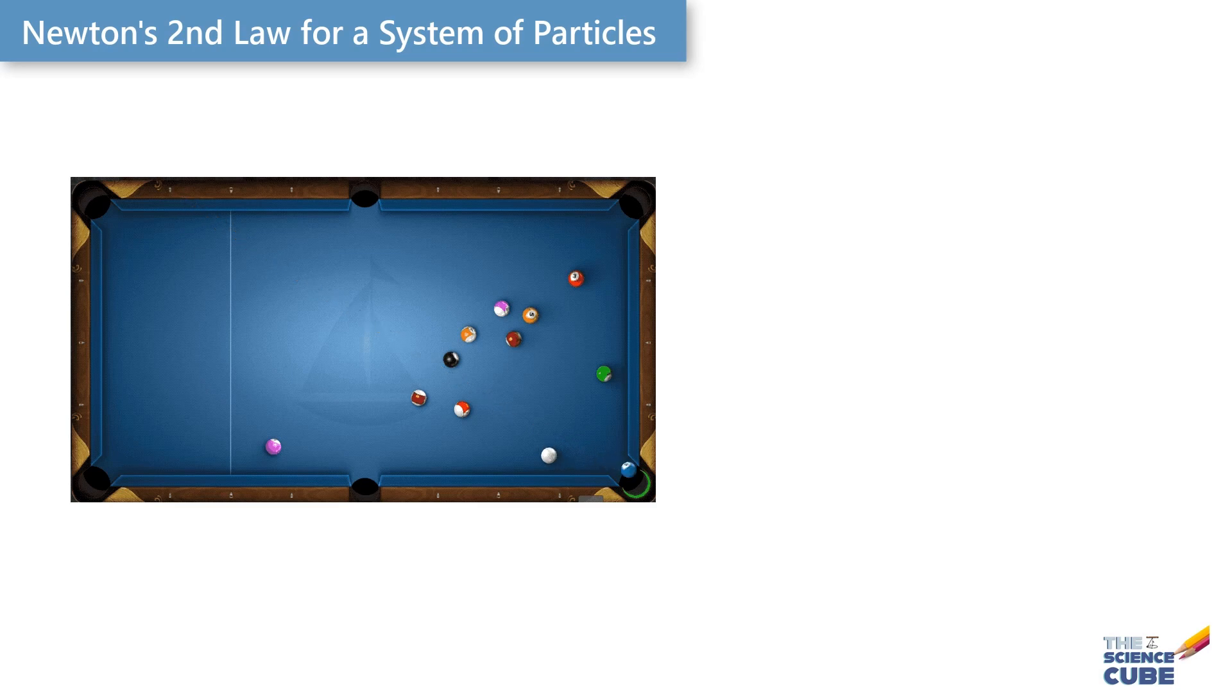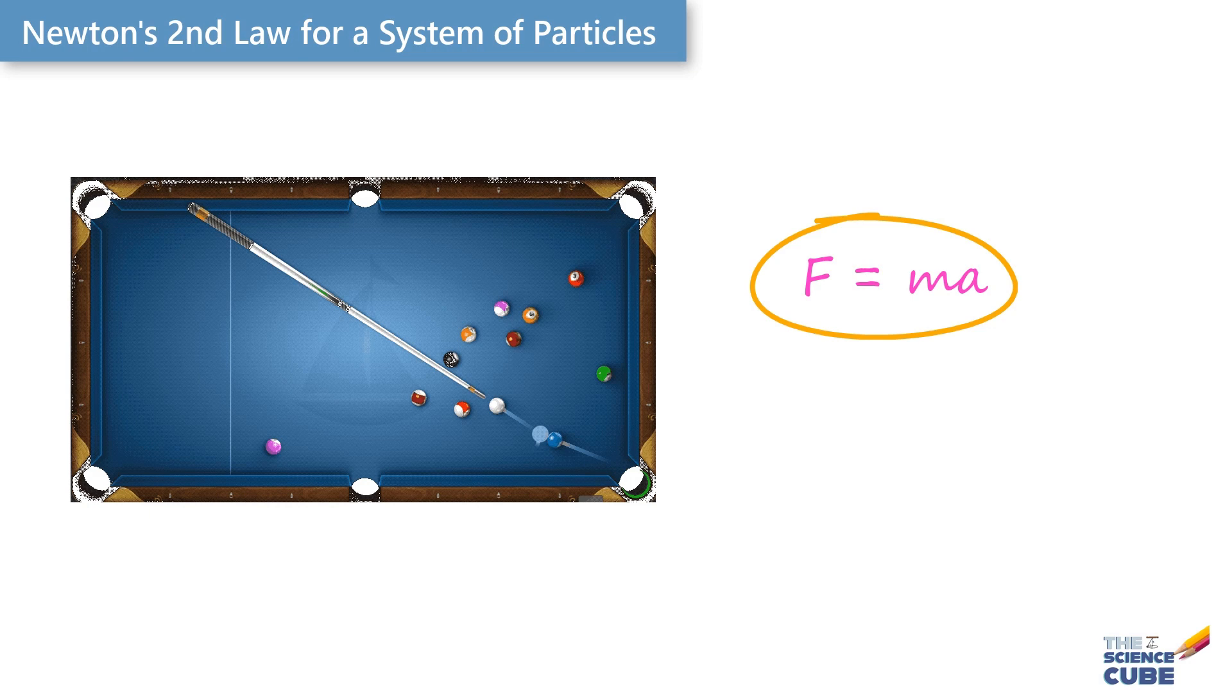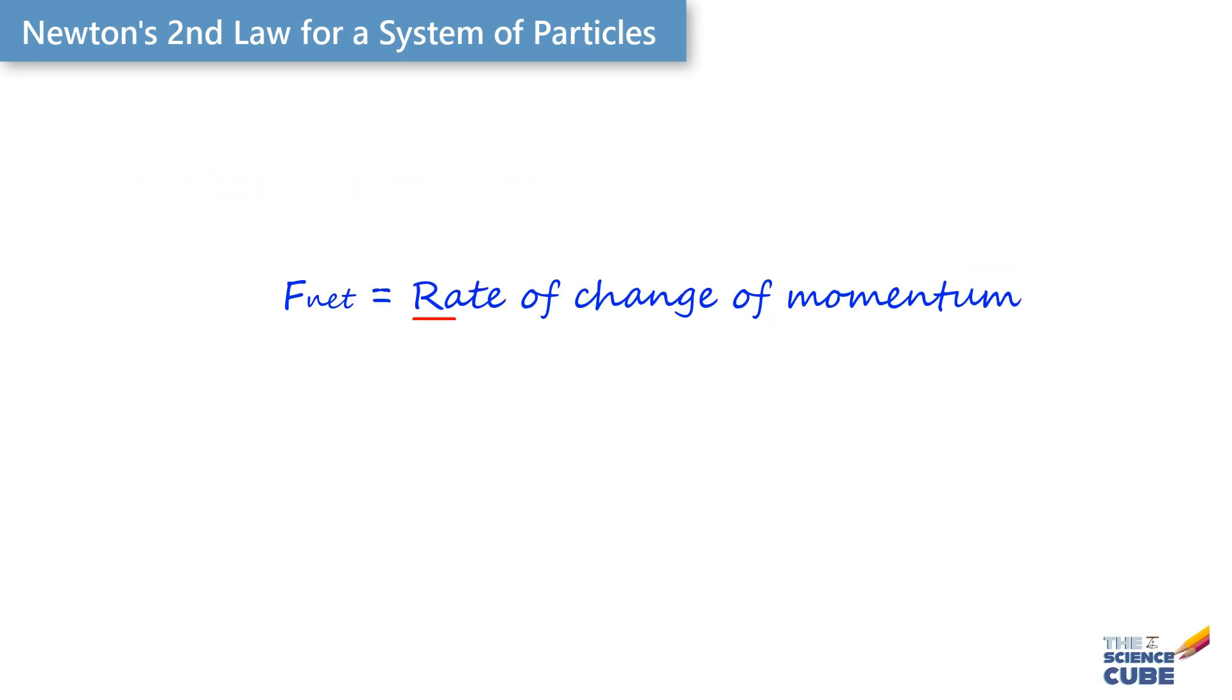Newton's second law of motion, the way we know, was not the original version Newton gave. Instead, Newton described the law in terms of the rate of change of momentum being equal to the net force that acts on a body.